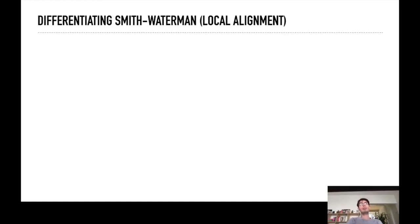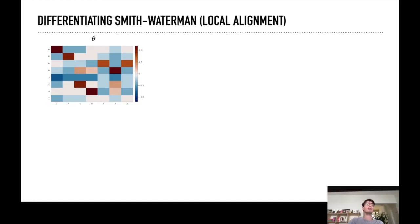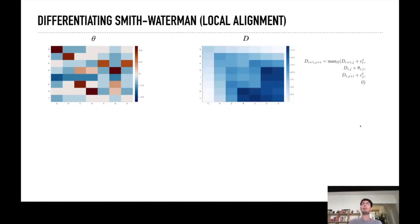We can also do this for Smith-Waterman, this is for local alignment, so finding local subsequences which are very similar. Slightly different example, also fill in a dynamic programming matrix, but here we add a fourth option of just stopping this alignment so you can also choose zero. Then instead of taking the final value we take the largest value of this matrix, but in spirit of our smoothed max we take the softmax of these values, so these are the likely positions where this local alignment is optimal. And then from all these positions we can backtrack back to the beginning.